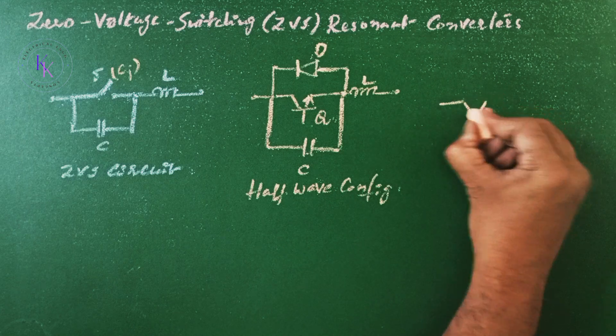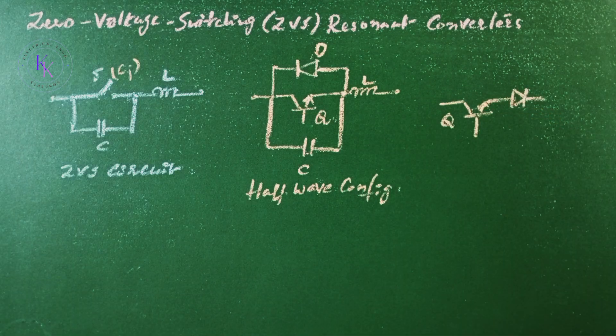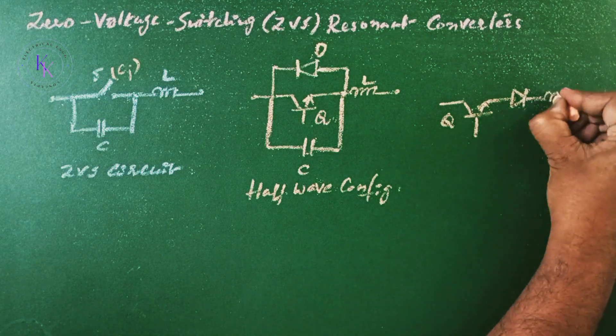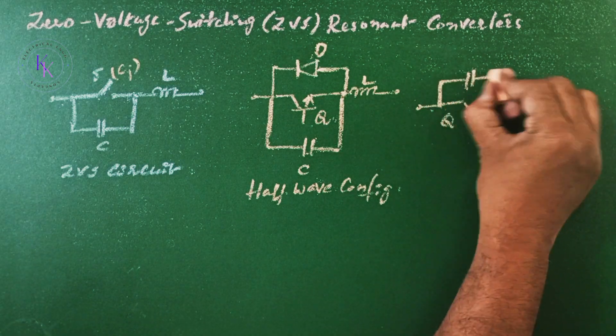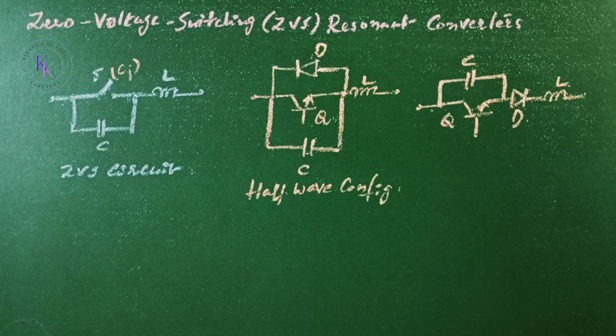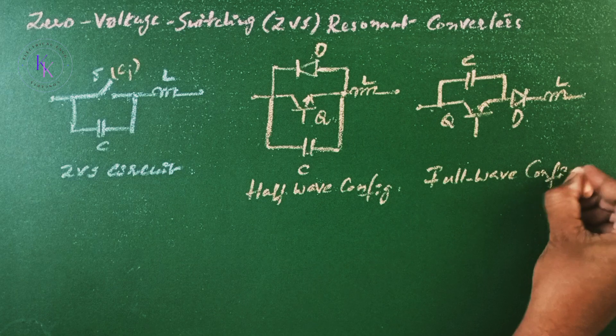For this circuit, if the diode D is in series with the transistor Q, then the voltage across the C can oscillate freely and the switch is operated in full-wave configuration.